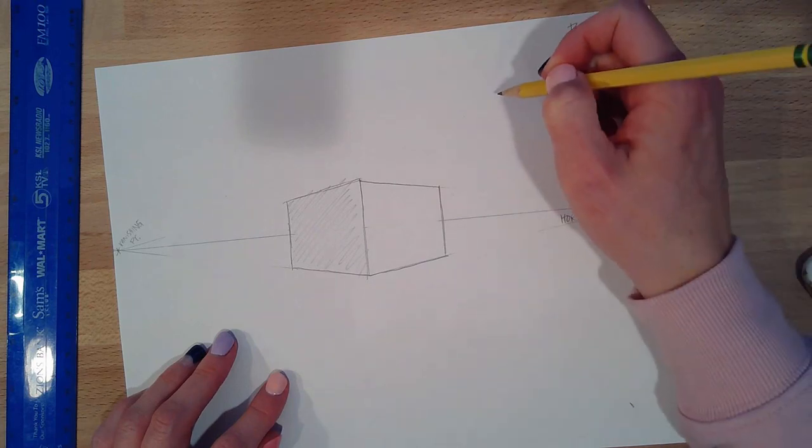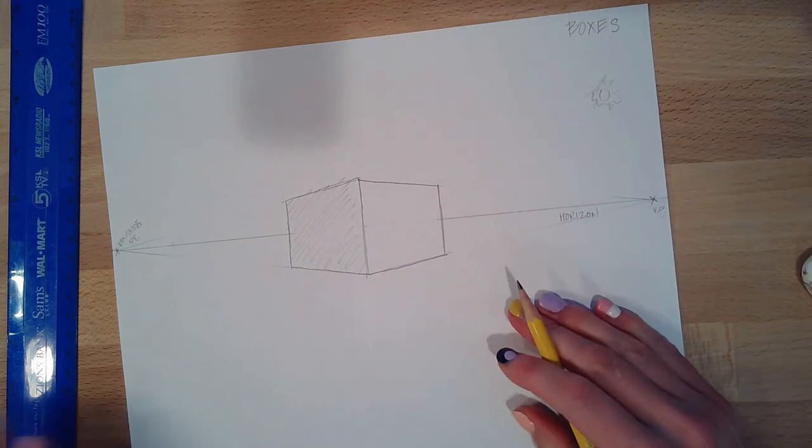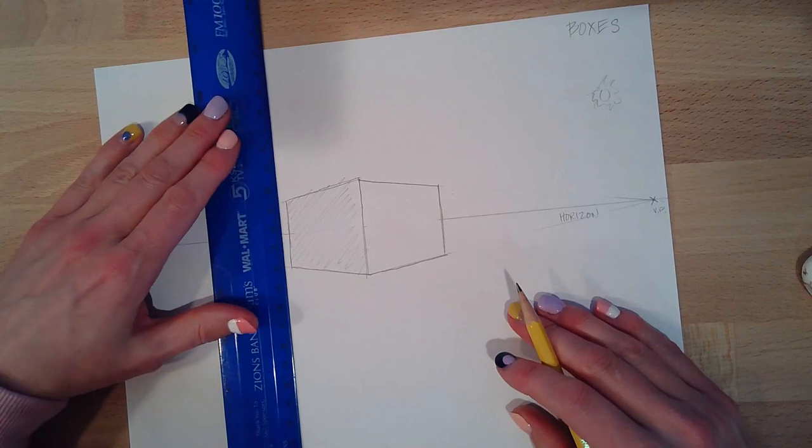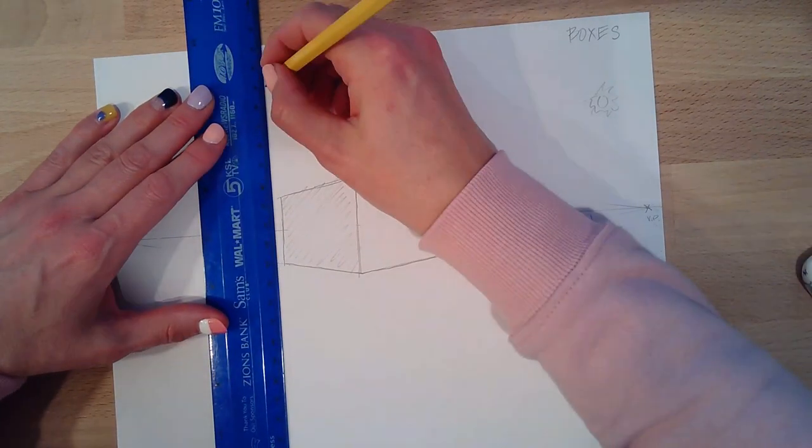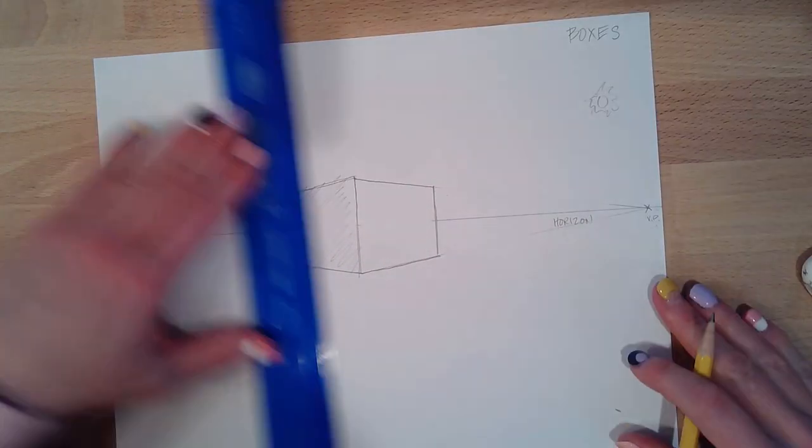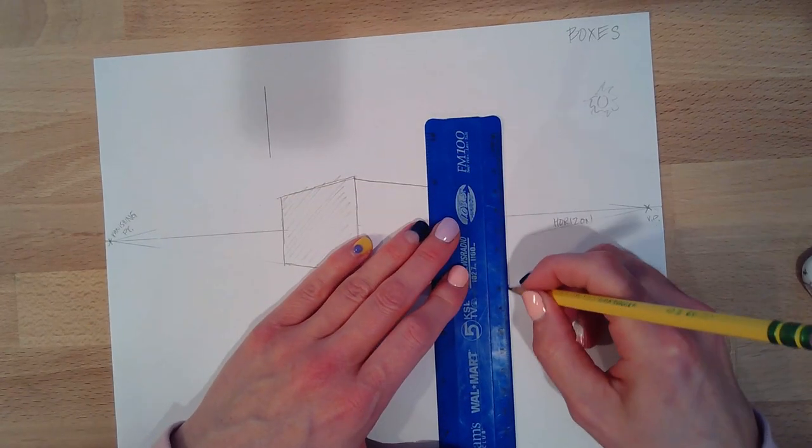Now I want to put a box above the horizon and below the horizon. So we're going to start with the same thing. We've got our nice vertical line above and let's put it to the side below.